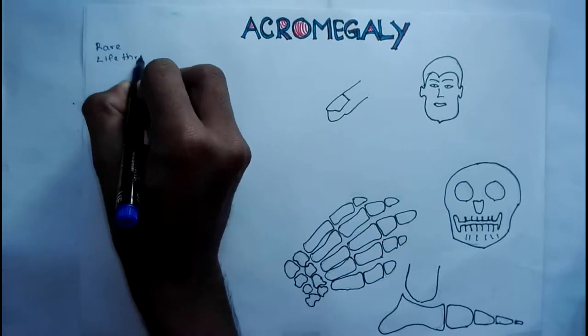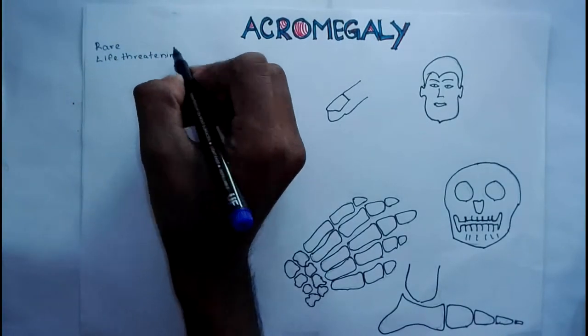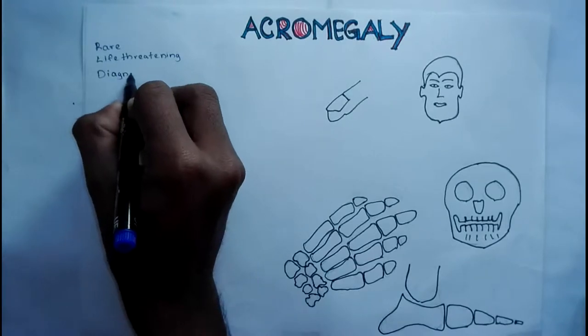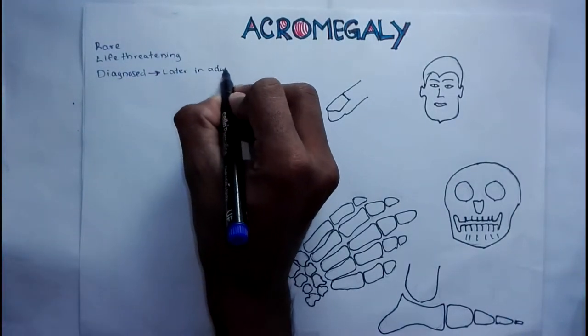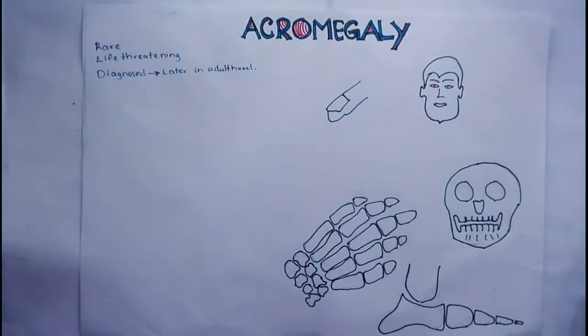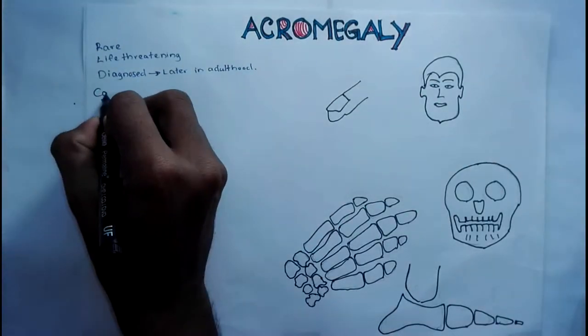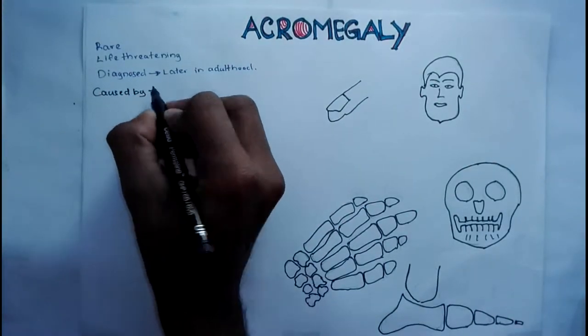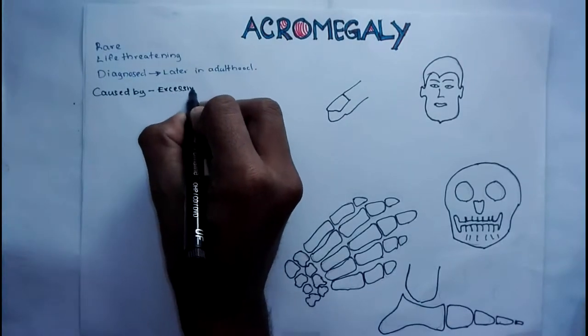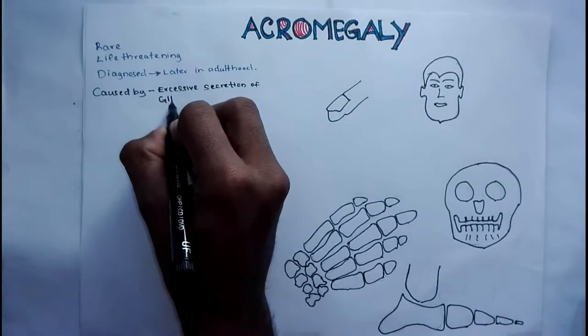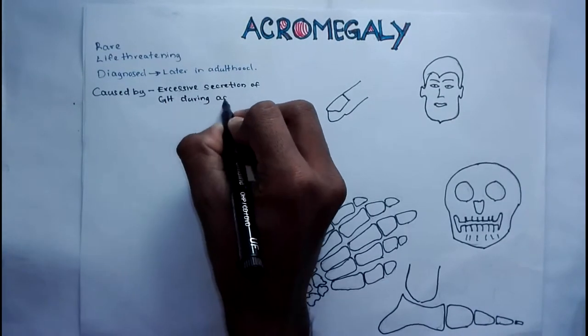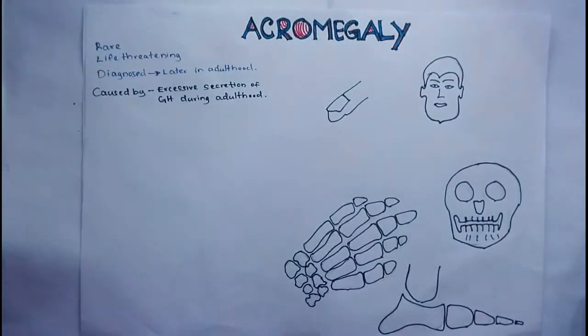Acromegaly is a rare and potentially life-threatening disorder diagnosed later in adulthood. It occurs due to the excessive secretion of growth hormone during adulthood. It is essential to say during adulthood because if it occurs during childhood it causes gigantism and not acromegaly.